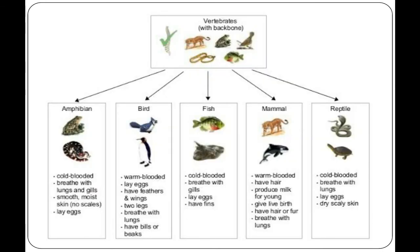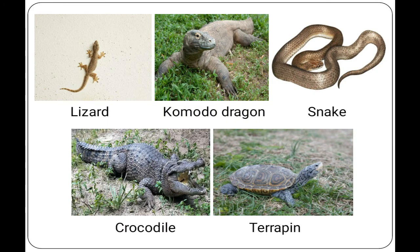The next group is reptiles. Reptiles are cold-blooded animals that can survive completely on land. They have dry, scaly skin which prevents their bodies from losing too much water. They reproduce by laying eggs on land, and their eggs have thick leathery shells to prevent them from drying up. Examples of reptiles include lizard, Komodo dragon, snake, crocodile, terrapin, etc.